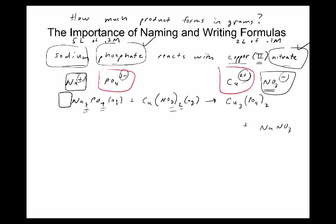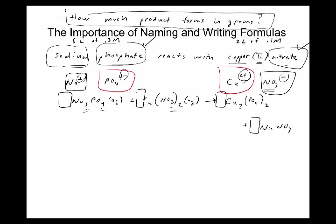To answer a question like how much solid product forms in grams, you need to compare mole ratios from the balanced equation. To balance this reaction you'd need a 2 here for nitrate, then a 3 for copper giving six nitrates, so a 6 there, then six sodiums requiring a 2 — and that also fixes the phosphate. These numbers aren't possible without getting the formulas right, and it all starts with going from names to formulas correctly.